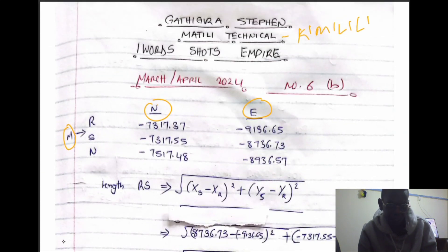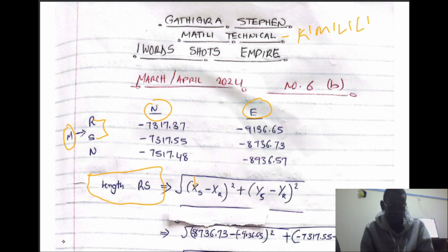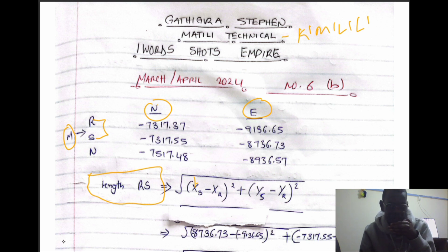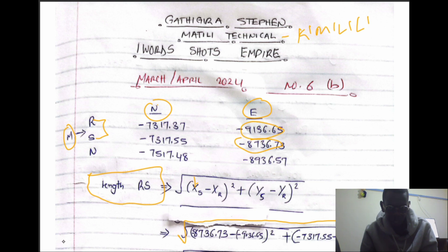We go ahead and calculate our solution. Given are the coordinates for the northing and the easting. This is the traditional formula commonly found in most books. The length of R to S equals the square root — in brackets — of the departure, which is the easting of S minus the easting of R, squared, plus the northing of S minus the northing of R, squared.